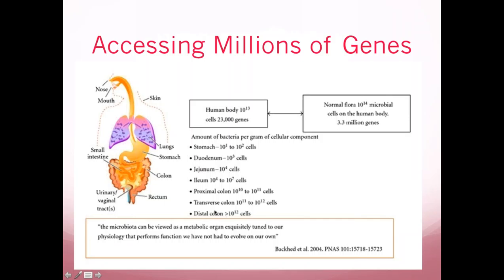There are different amounts of cells — stomach, duodenum, jejunum, ileum, proximal, and transverse. There are different varieties of organisms living at different counts throughout the GI tract. That's just important to know as we move into the probiotic world.